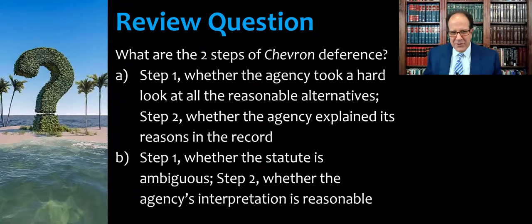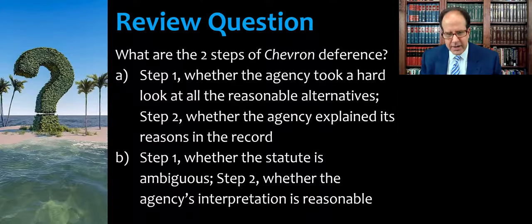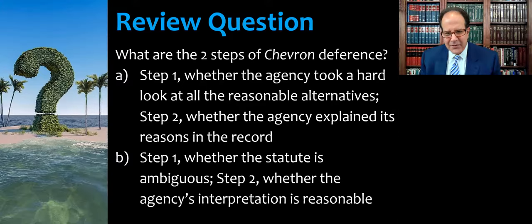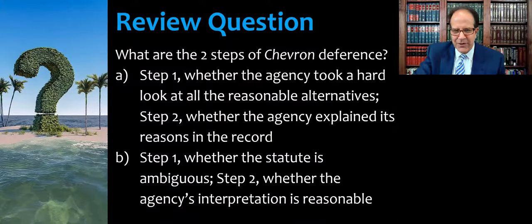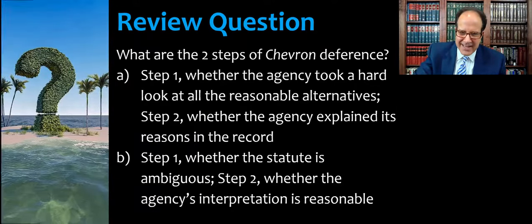Here's a review question to make sure you're paying attention. What are the two steps of Chevron deference? Option A: step one, whether the agency took a hard look at all the reasonable alternatives; step two, whether the agency explained its reasons in the record. Option B: step one, whether the statute is ambiguous; step two, whether the agency's interpretation is reasonable. Hopefully you know the answer. If not, you weren't paying attention and need to go back and watch this video again.